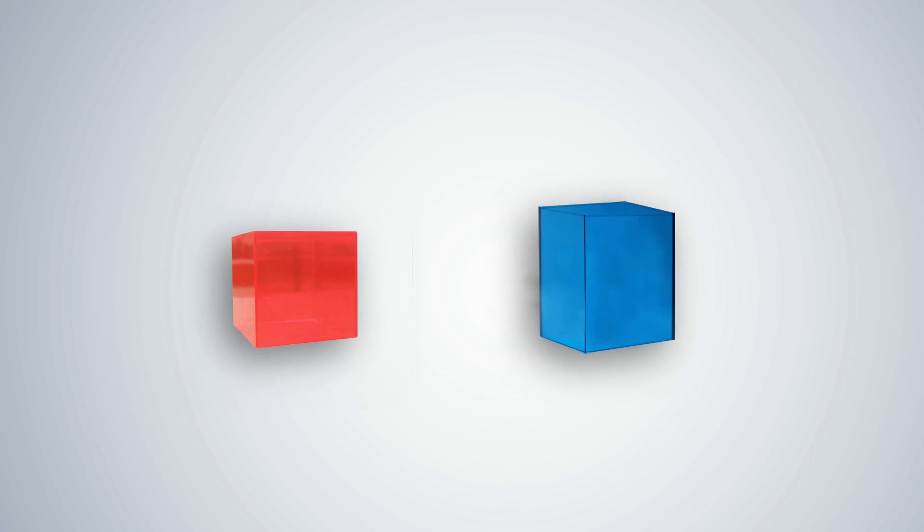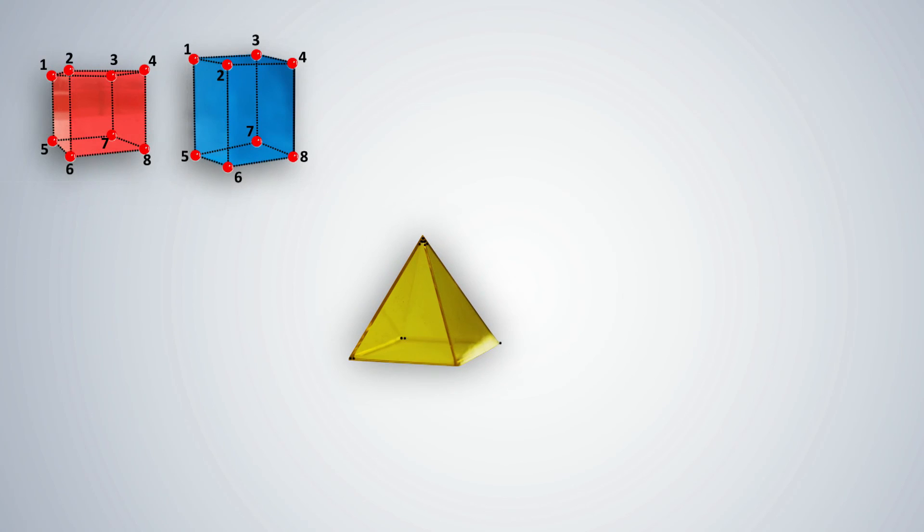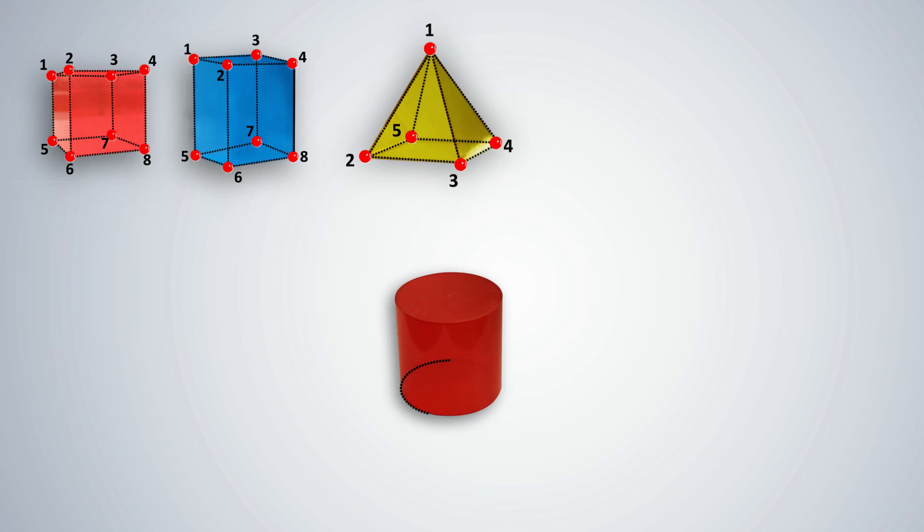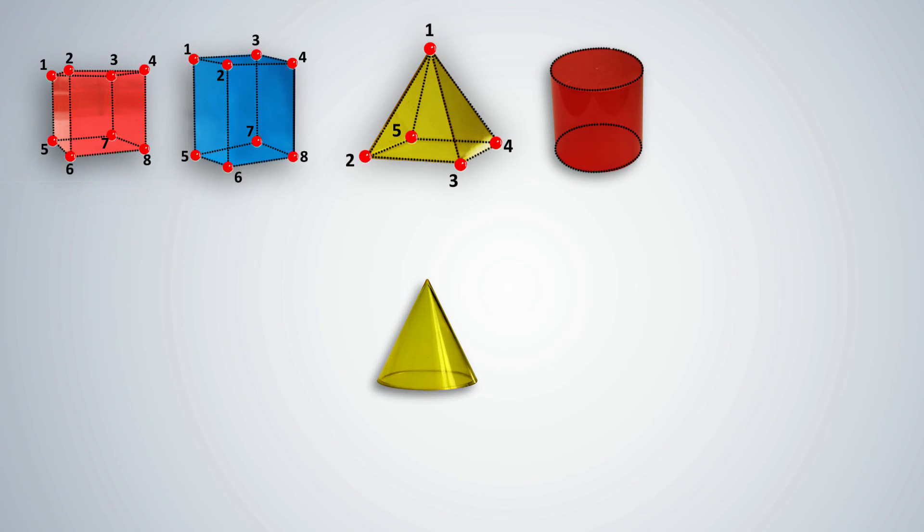A vertex in a solid shape is the point where 3 edges meet. A cube as well as a cuboid has 8 vertices. A pyramid has 5 vertices. A cylinder, on the other hand, does not have a vertex since it does not have 3 edges meeting. Similarly, a cone does not have a vertex, but some people prefer to call the pointed tip as a vertex.